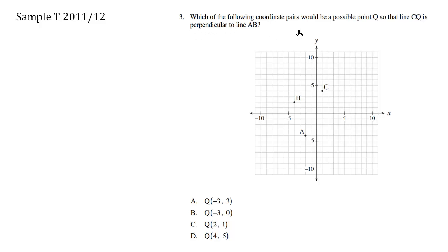Which of the following coordinate pairs would be a possible point Q so that CQ is perpendicular to line AB? So we see here that line AB is going to be from here to here. So we want something perpendicular. So CQ would be perpendicular to line AB.